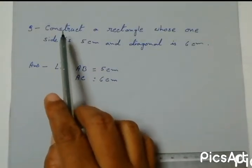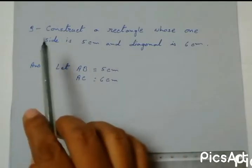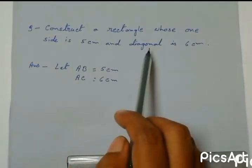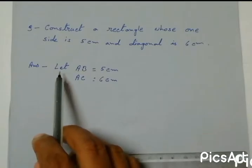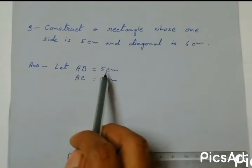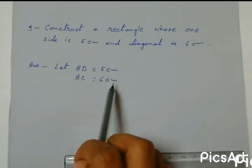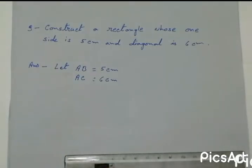Construct a rectangle whose one side is 5 cm and one diagonal is 6 cm. Let AB be 5 cm and AC, which is diagonal, be 6 cm.